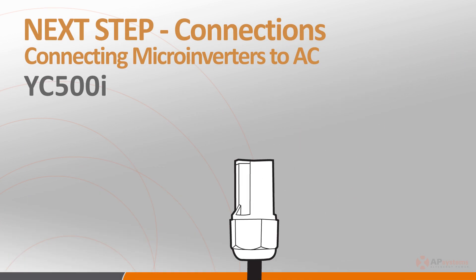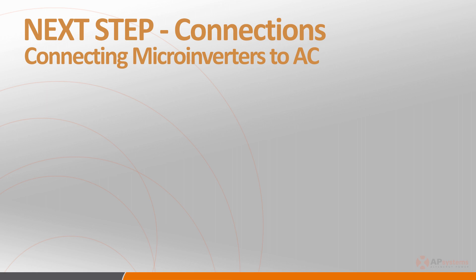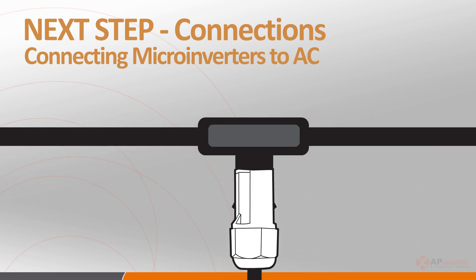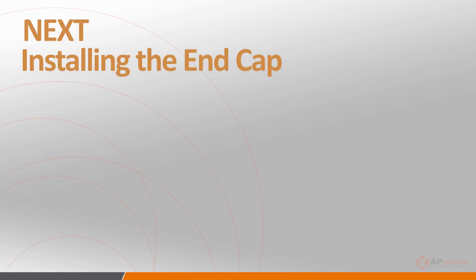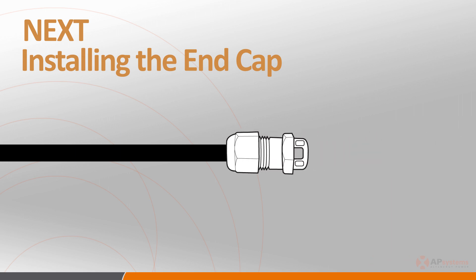For the YC500i, plug the AC female connector from the microinverter into the male connector on the trunk cable. Remember the branch inverter limits: the maximum number of units per 230 volts, 20-amp circuit is 7, or a total of 14 PV modules. Also, a word of caution — do not string the AC cabling so tight that it is placing stress on the connection points. Once the AC connections have been made, install the protective end cap onto the open female AC connector on the last inverter in each branch circuit.